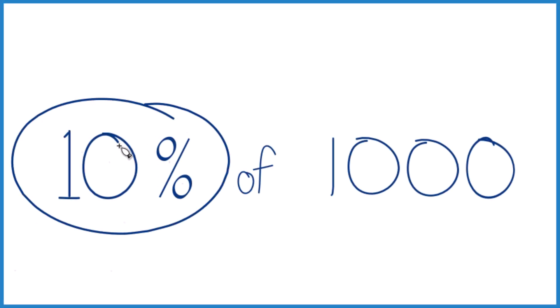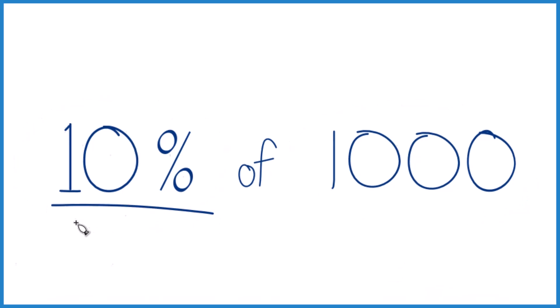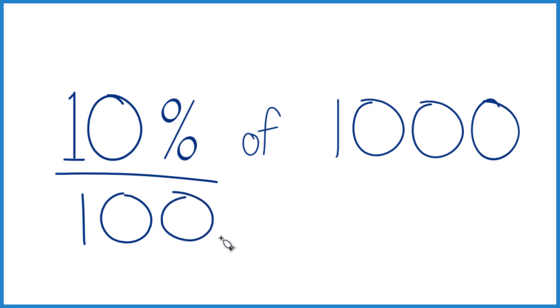So here's how you find 10% of 1,000. The way I like to think about it is 10%, that's 10 per 100. So if I had just 100, it would be 10.